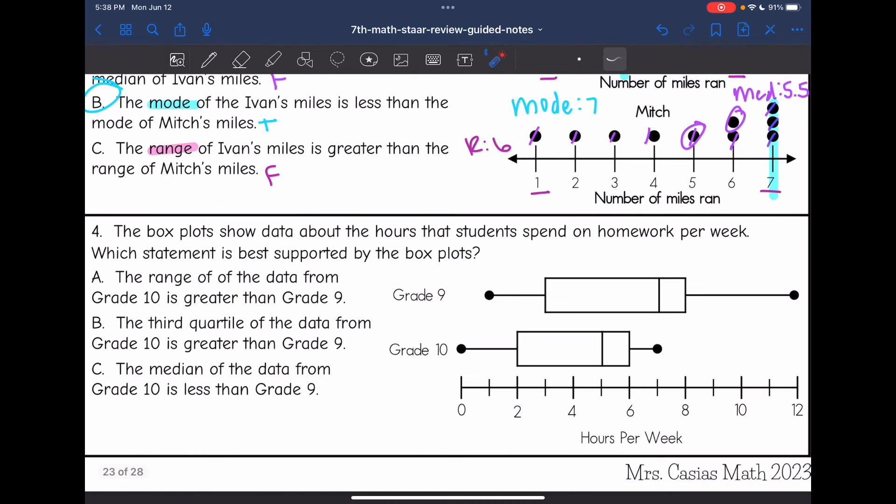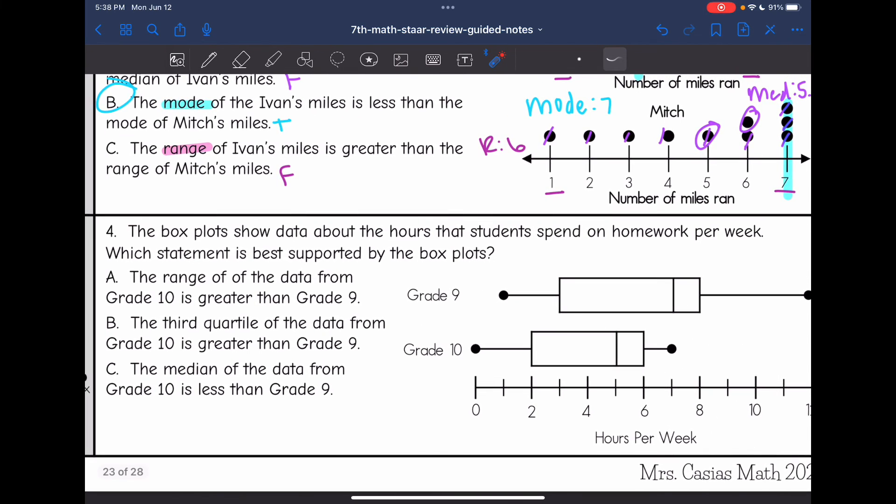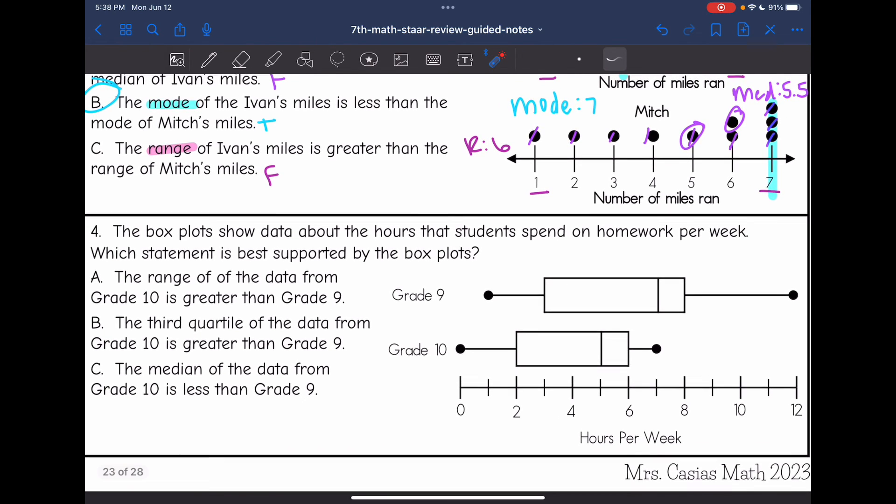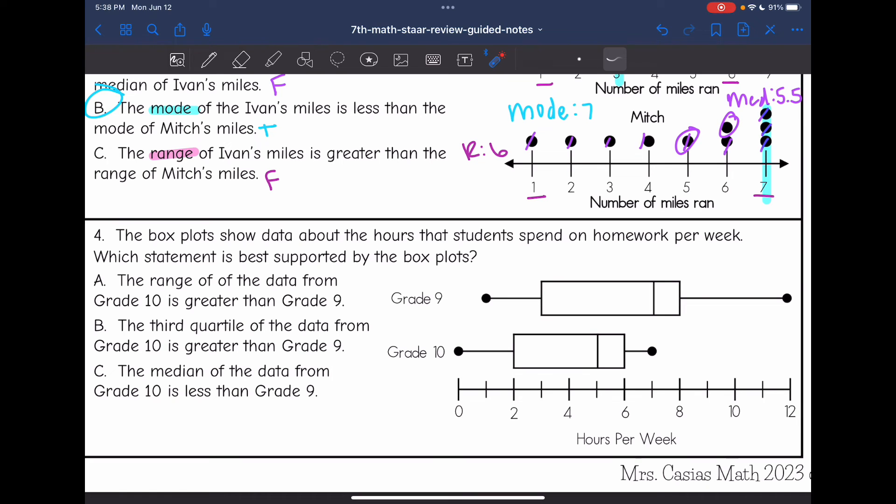So let's look at number four. It says the box plot shows data about the hours that students spend on homework per week. Which statement is best supported by the box plots? So A says the range of the data from grade 10 is greater than grade nine. So I need to find the range of both of these box plots. It looks like nine has a minimum of one and a maximum of 12. And then grade 10 has a minimum of zero and a maximum of seven.